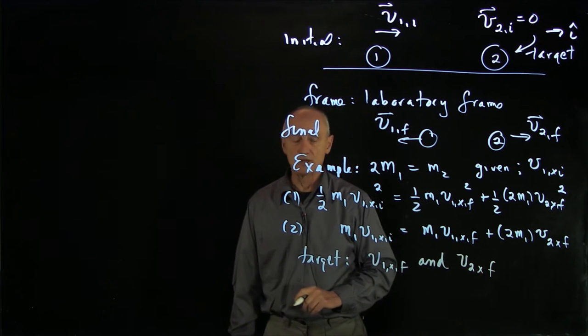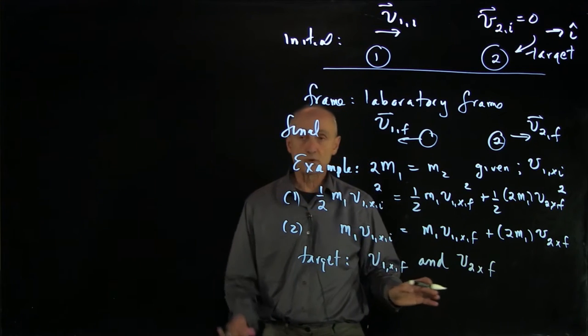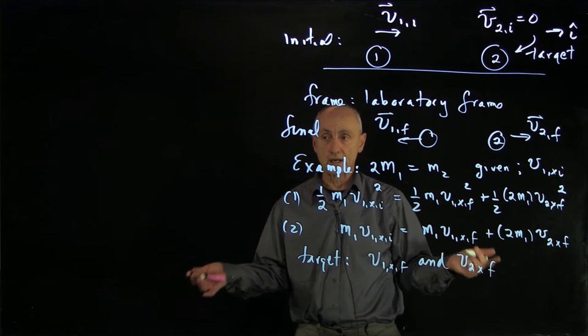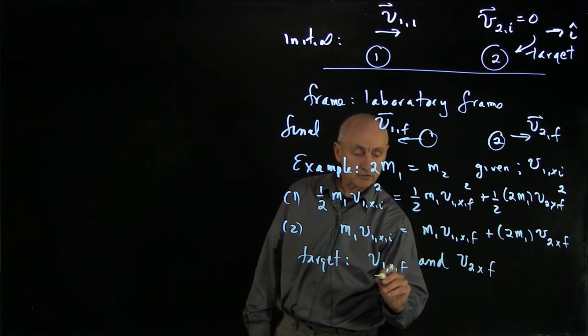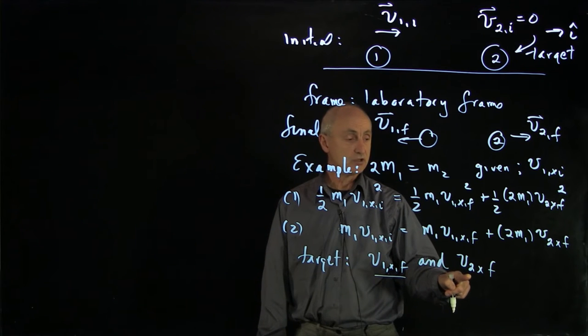So we have two equations and two unknowns. Now it's a quadratic equation. From a problem solving strategy, we have to identify which quantity we're going to solve first. Let's solve for v1x final, which means we need to eliminate v2x final.